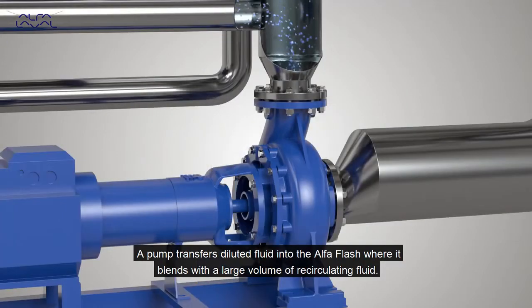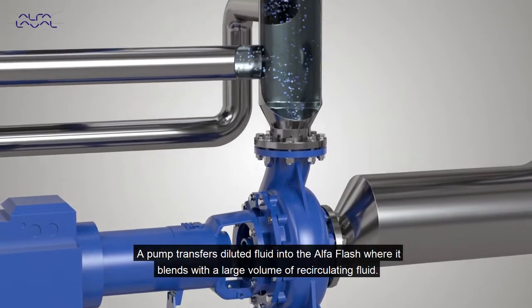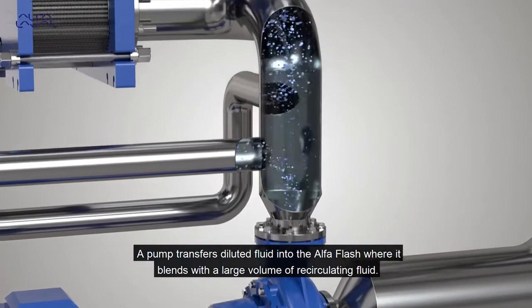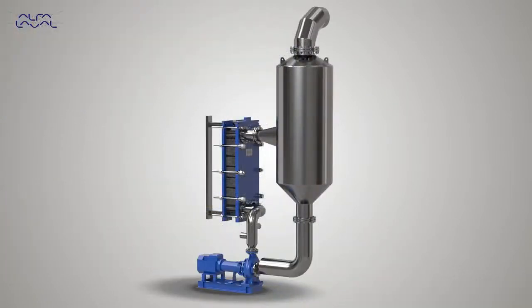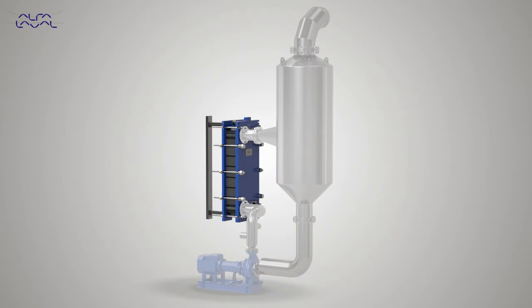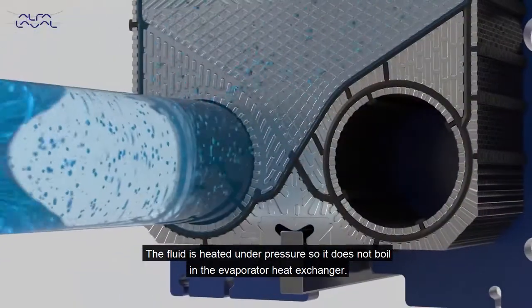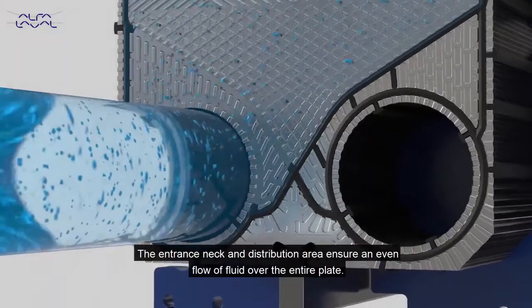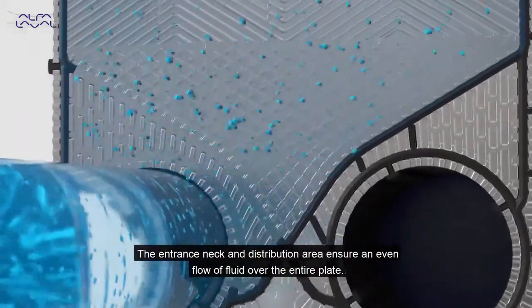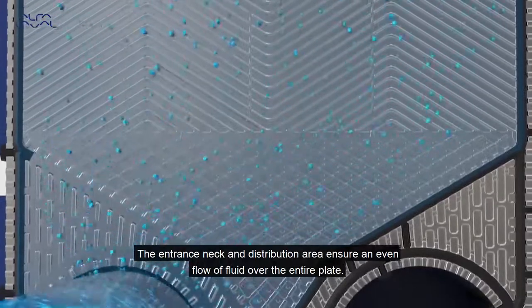A pump transfers diluted fluid into the Alpha Flash where it blends with a large volume of recirculating fluid. The fluid is heated under pressure so it does not boil in the evaporator heat exchanger. The entrance neck and distribution area ensure an even flow of fluid over the entire plate.